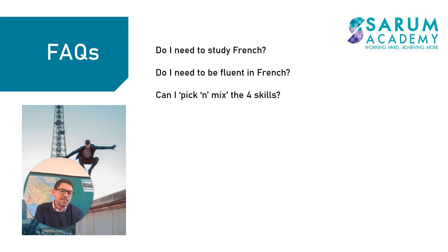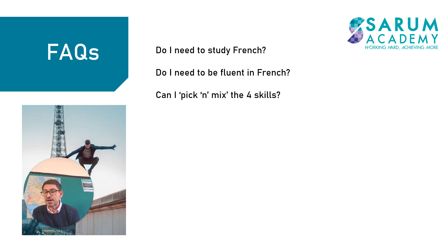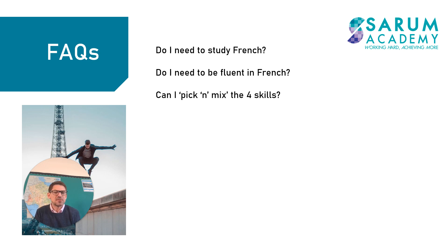Can I pick and mix the four skills? It used to be the case that you could do foundation level for reading and writing but higher level for the other two skills. That is not the case anymore. If we feel you are best suited to foundation level — up to grade five — then you would be doing so in reading, listening, writing and speaking. Equally, if we feel you have the potential for higher grades, we'll put you onto the higher paper for all four skills. Students will do all four papers at foundation level or all at higher level.